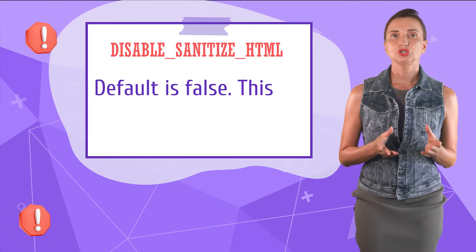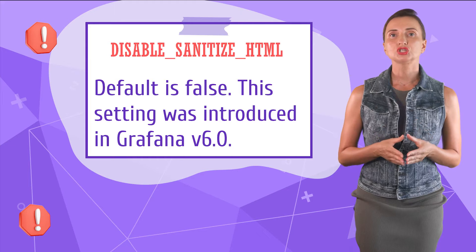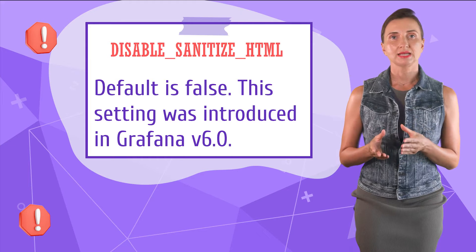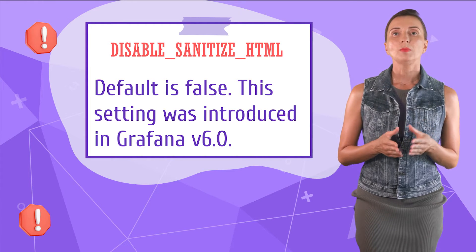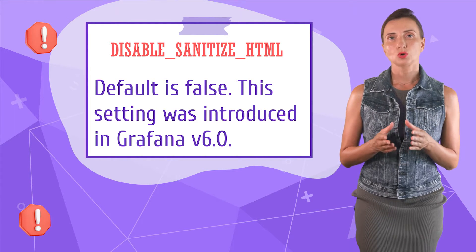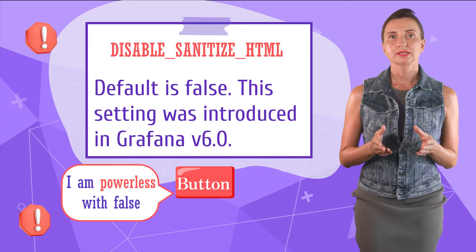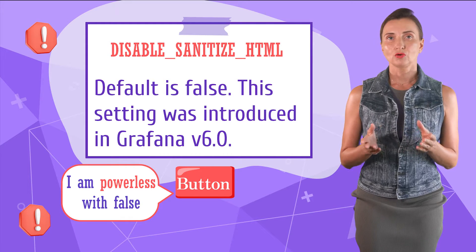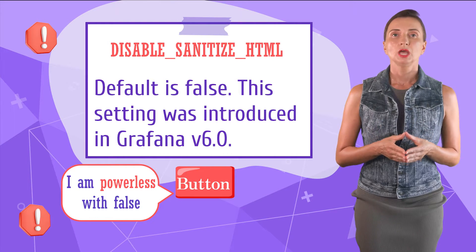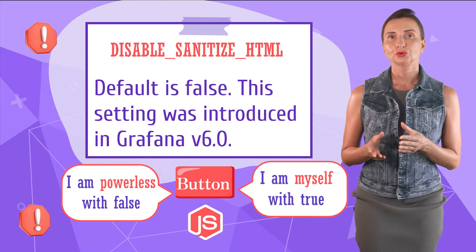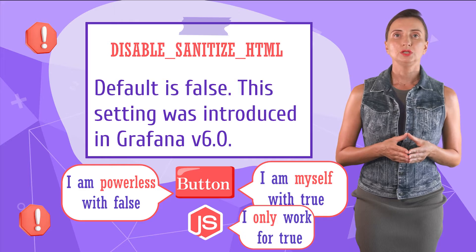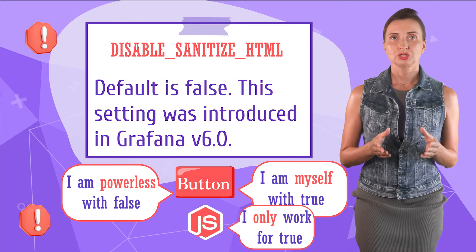A note about the disable sanitize HTML Grafana setting: this configuration determines whether HTML sanitizing is on or off. By default it's on, which disables actions like onClick for a button. Make sure to set it to true if you need all actionable HTML elements and JavaScript to work.